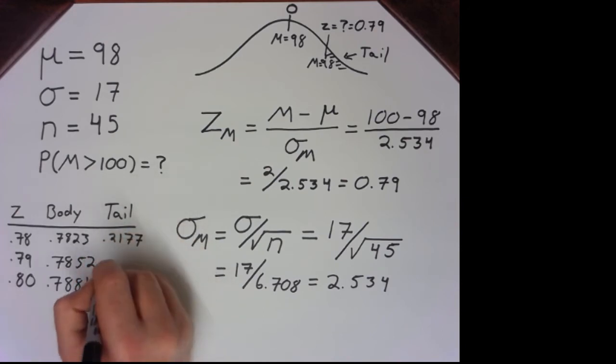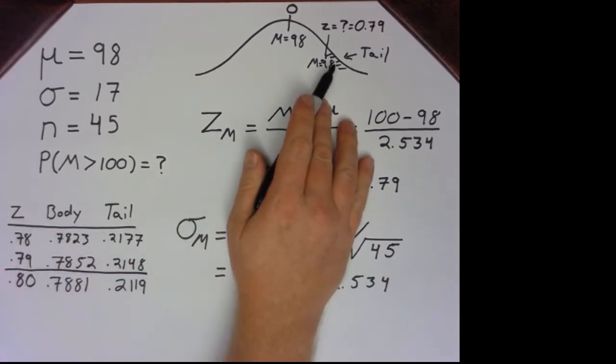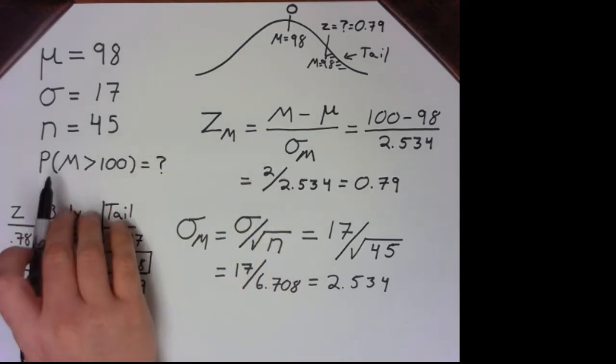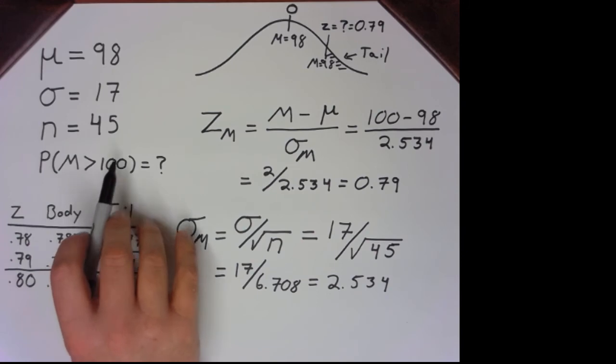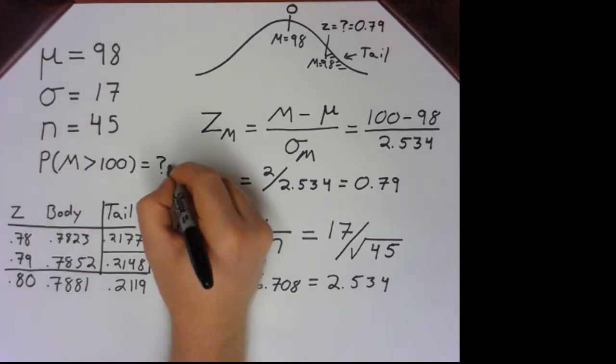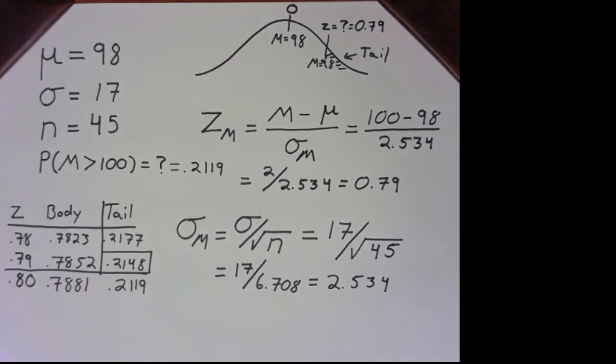So what we'll have to do is look up our z-score, which is 0.79. And then it helps if you go ahead and draw a line across. And we know we need the area in the tail, so draw another line across. And we can see that the probability of getting a mean greater than 100 from a population with a mean of 98, a standard deviation of 17, and a sample size of 45 is 0.2119.